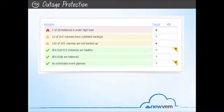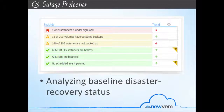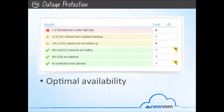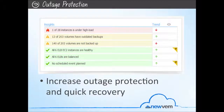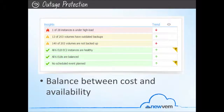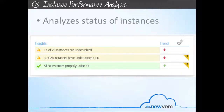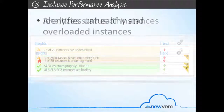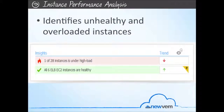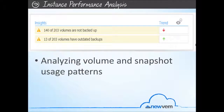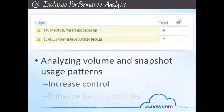NewVim helps you with outage protection and quick recovery by analyzing your baseline disaster recovery status, reflecting how well AWS best practices have been implemented, and recommending features and best practices to reach optimal availability, increase outage protection, and quick recovery. NewVim's usage pattern analysis helps you reach an optimal balance between cost and availability. With Instance Performance Analysis, NewVim continuously analyzes the status of your instances and identifies unhealthy and overloaded instances. NewVim helps you with volume backup effectiveness by analyzing your volume and snapshot usage patterns to help you increase control and enhance your backup policies.